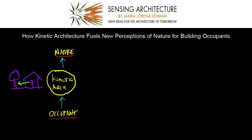When you add kinetics into this diagram, you will notice that nature can be represented anew to building occupants. For instance, if within a kinetic architecture a window frames nature and it moves or even changes color, what the occupant experiences as they look out that window will change. Their perception of the nature they experience through the window will be different as the kinetic architecture transiently changes.